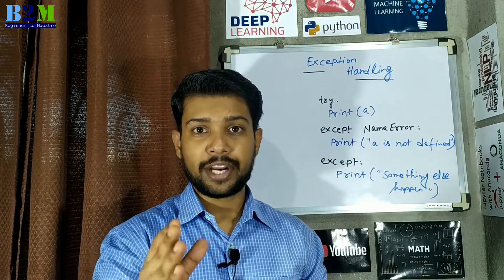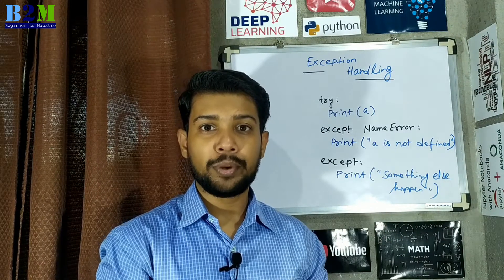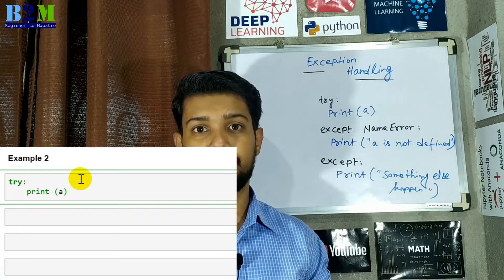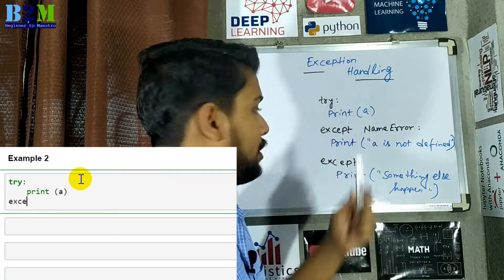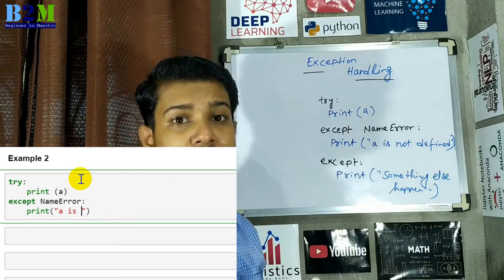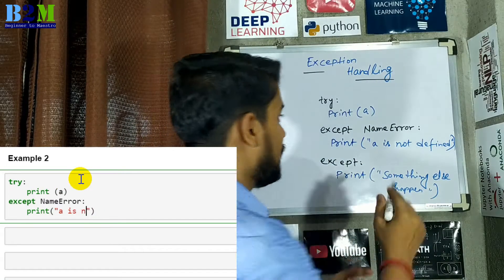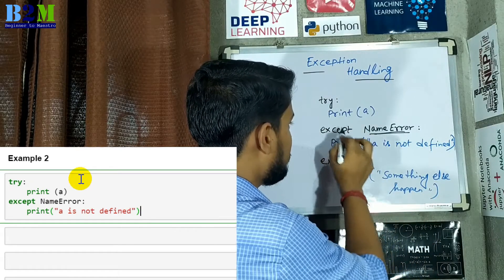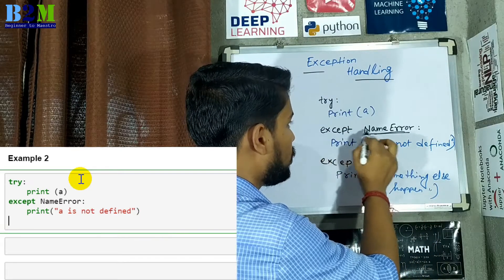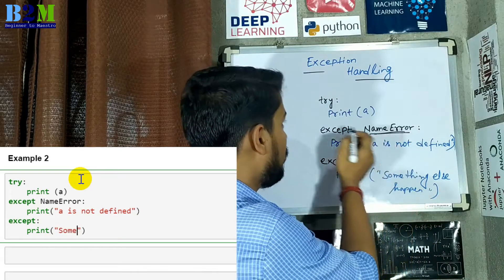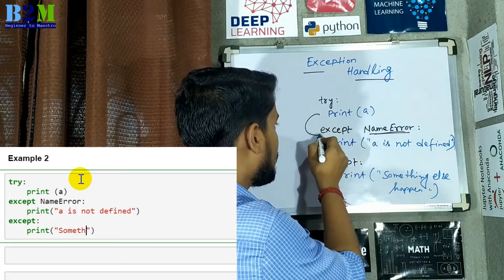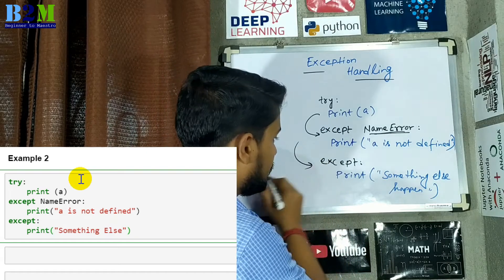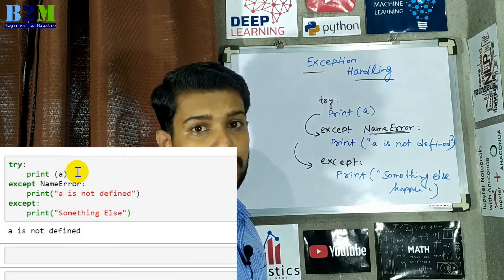You can write more than one exception block using the appropriate name of the exception or error. For this example, 'a' is not defined, so the error name is NameError. With the except block, we pass the error name, and then it will come directly to that block.